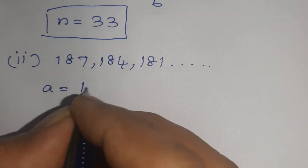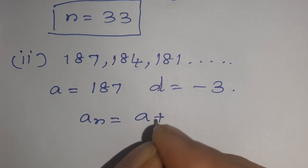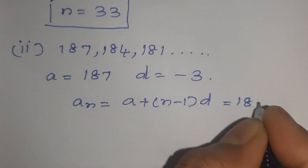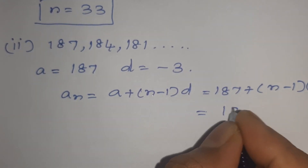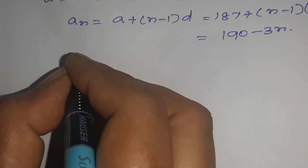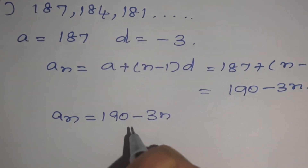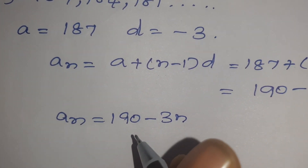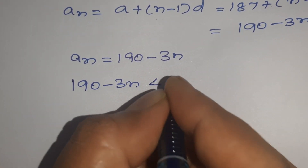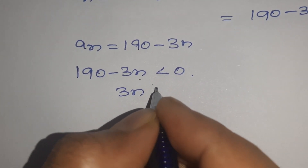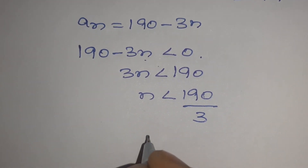Here A = 187, D = -3, and AN = A + (N-1) × D = 187 + (N-1) × (-3) = 190 - 3N. So AN = 190 - 3N. For a negative term, AN must be less than 0, so 190 - 3N < 0, which gives 3N > 190, so N > 190/3, meaning N is greater than approximately 63.